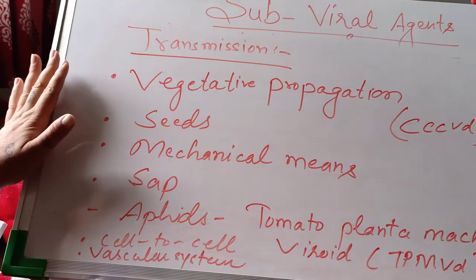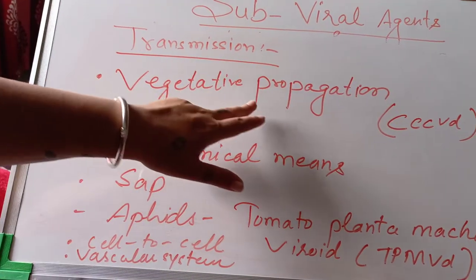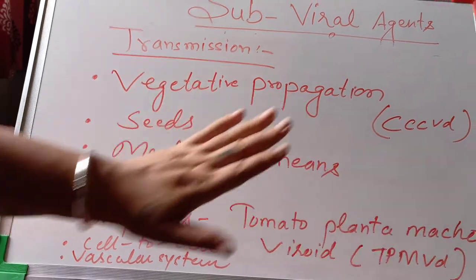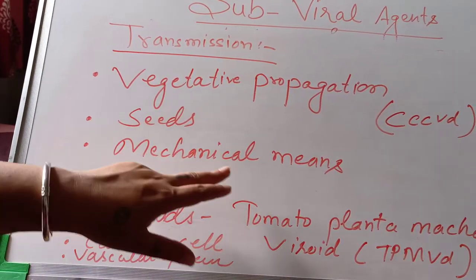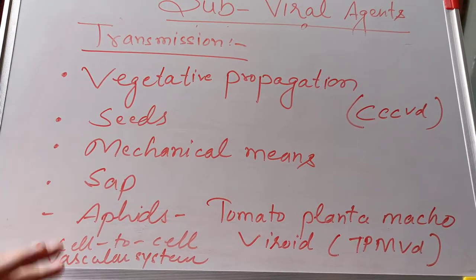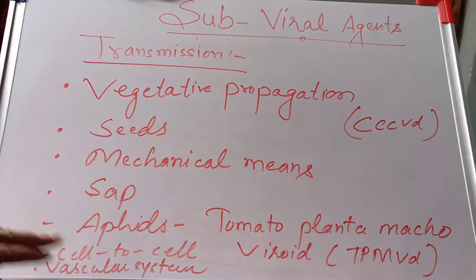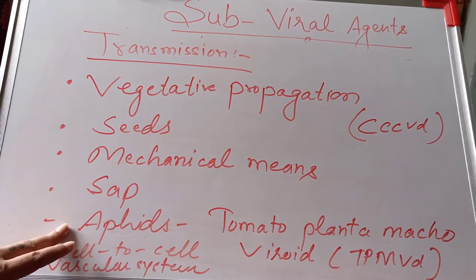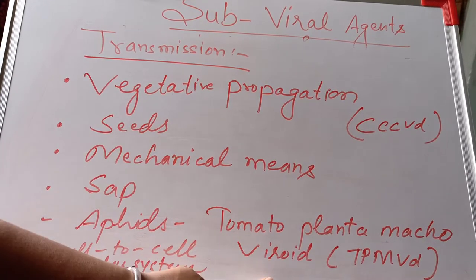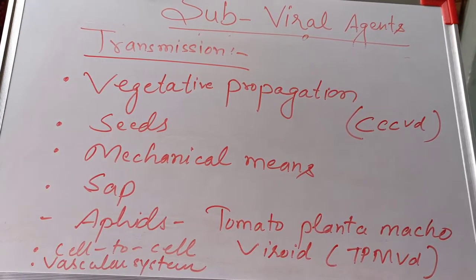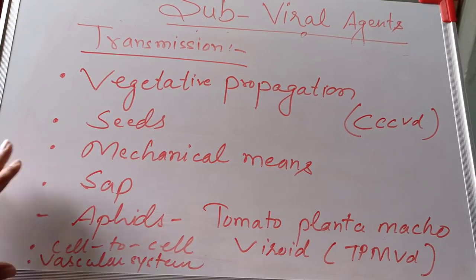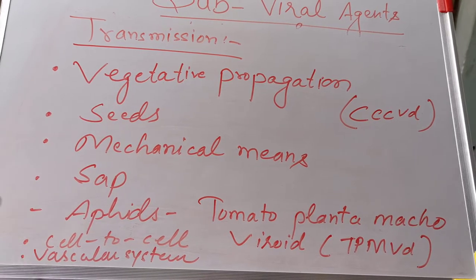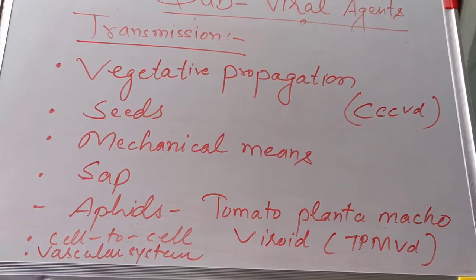Transmission of viroids takes place by various means: first, vegetative propagation such as grafting of infected plants; second, through infected seeds; third, by mechanical means during harvesting and cultivation through sap, which is the liquid portion of the plant; fourth, through aphids as vectors — for example, tomato planta macho viroid is transmitted through aphids; fifth, cell-to-cell transmission within the plant through plasmodesmata; and sixth, through the vascular system via xylem and phloem, spreading the viroid throughout the entire plant.